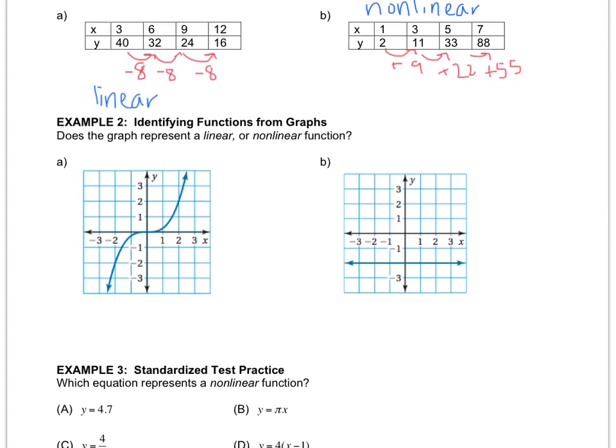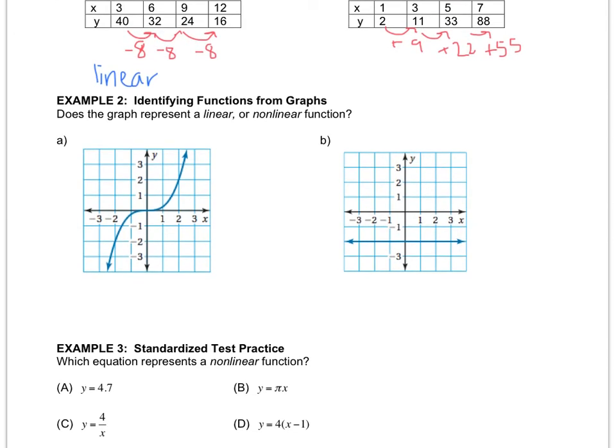You can easily look at a graph to see if something's linear. Remember, linear makes a line. So example A is not a line because lines can't be curved. Remember, we talked about that. So A is nonlinear. In example B, that is a line, so it's linear.